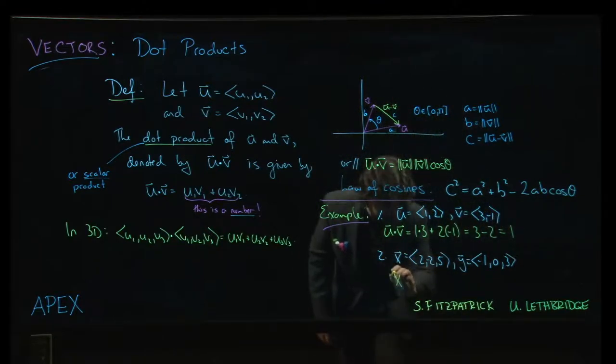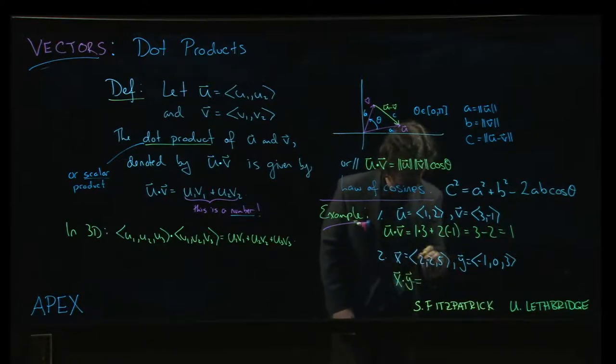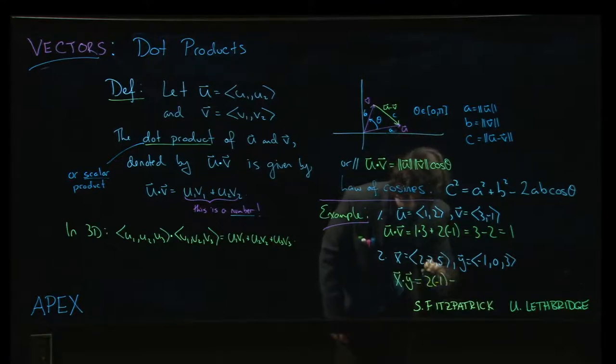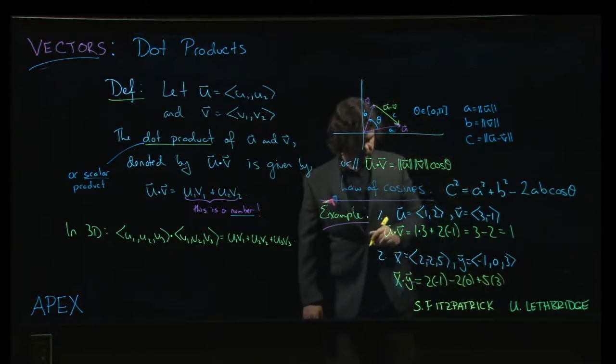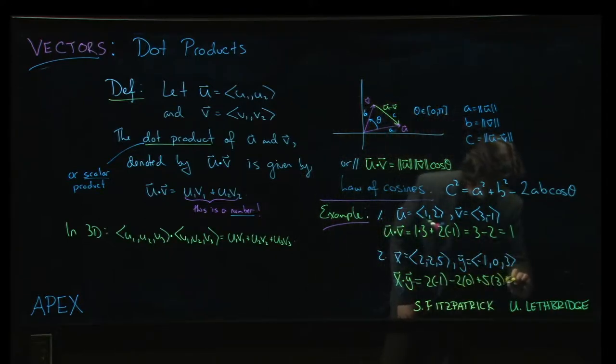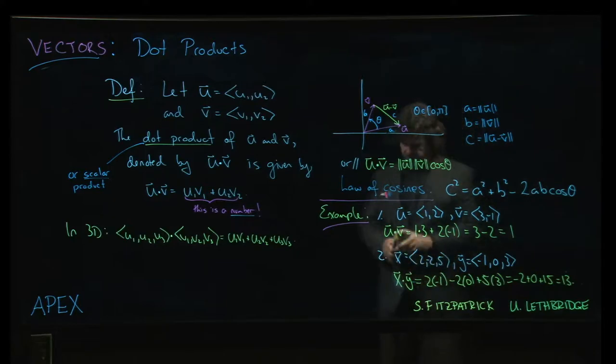In the second pair, x dot y, and again we multiply the corresponding entries. So, it's going to be two times minus one, and then minus two times zero, and then five times three. So, we get minus two plus zero plus fifteen equal to thirteen.